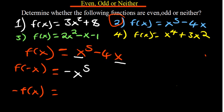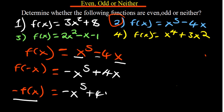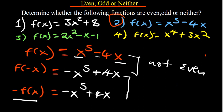Then -f(x) = -(x⁵ - 4x) = -x⁵ + 4x. Comparing: f(-x) = -x⁵ + 4x and -f(x) = -x⁵ + 4x — they are equal. Since f(-x) = -f(x), this is an odd function. It is not even because f(-x) ≠ f(x).